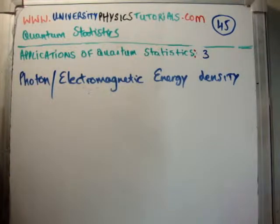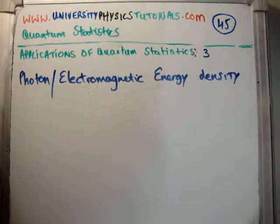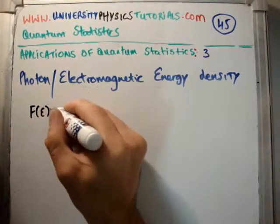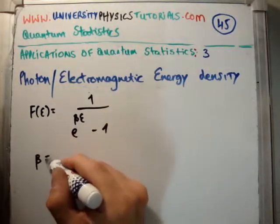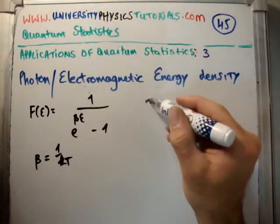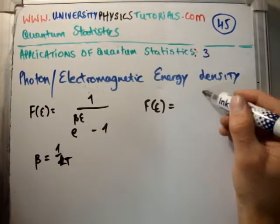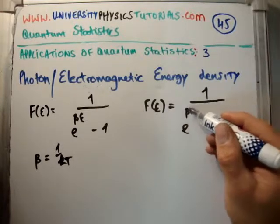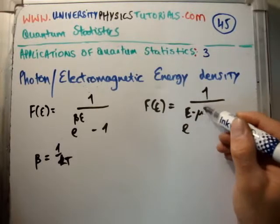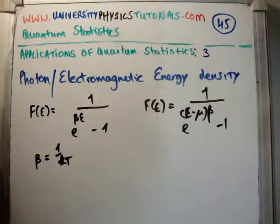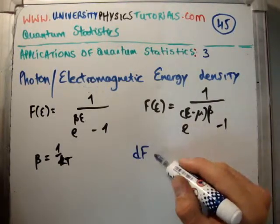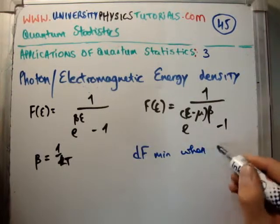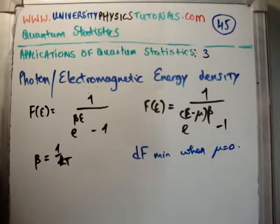In the previous video on the Planck distribution, what we found was that the Planck distribution f(ε) is equal to 1 over e to the beta epsilon minus 1. Where thermodynamic beta is 1 over kT. This was in contrast to the Bose-Einstein distribution function, which is ε minus mu times beta minus 1 in the exponent. The difference is that for photons the chemical potential is equal to zero, because we had to minimize the Helmholtz free energy, which is minimized when mu equals zero — I discussed that in video number 44.